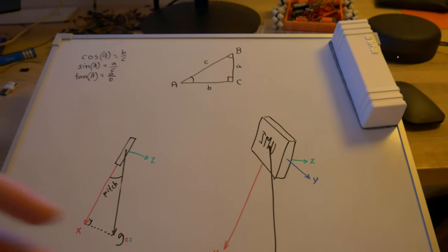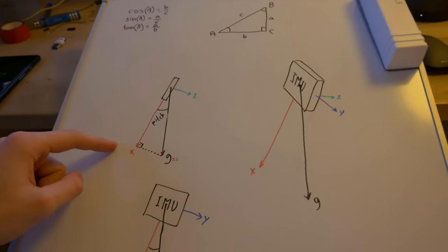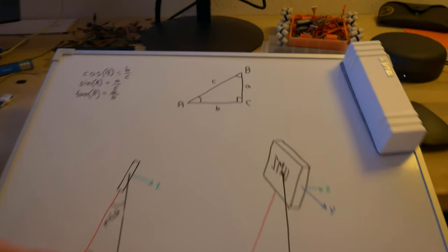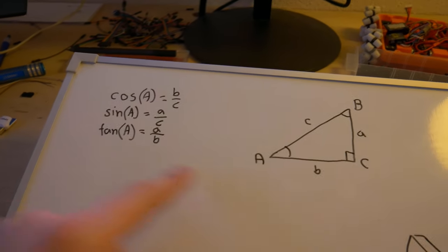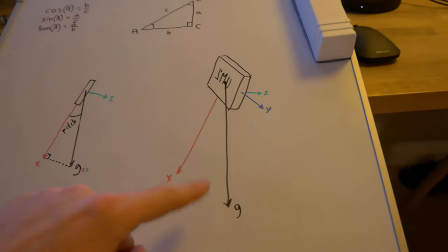Here's an overview of the math that goes into measuring the pitch and roll angle using the accelerometer. This is the math, pretty basic. Let's look at this example.